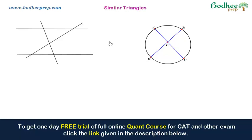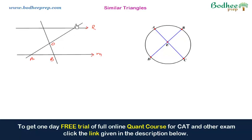Many times you will get a question where there is a pair of two parallel lines, say L and M, and there is a cross between them. Suppose this point is A, this is B, this is O, this is C, and this is D. Then triangle AOB is similar to triangle COD.